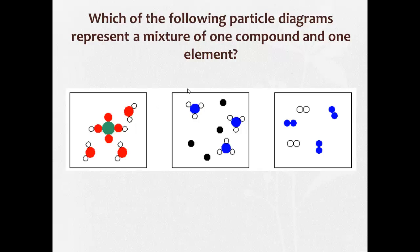Which of the following particle diagrams represent a mixture of one compound and one element? We're looking for, there's no elements here so it can't be this. Plus we have two different compounds. Here's an element, and there's one kind of element. Here's one kind of compound. Ta-da. One kind of element, and we'll talk about that when we do elements and compounds in more detail later. Here's another kind of element, so there's two elements. So no.